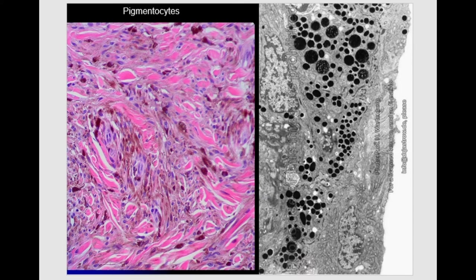In the connective tissue we can also find different types of leukocytes, such as T and B lymphocytes, eosinophils, and neutrophils — especially after different pathological conditions like inflammation, when formed elements of blood migrate through the vessel wall into the interstitium together with lymph.